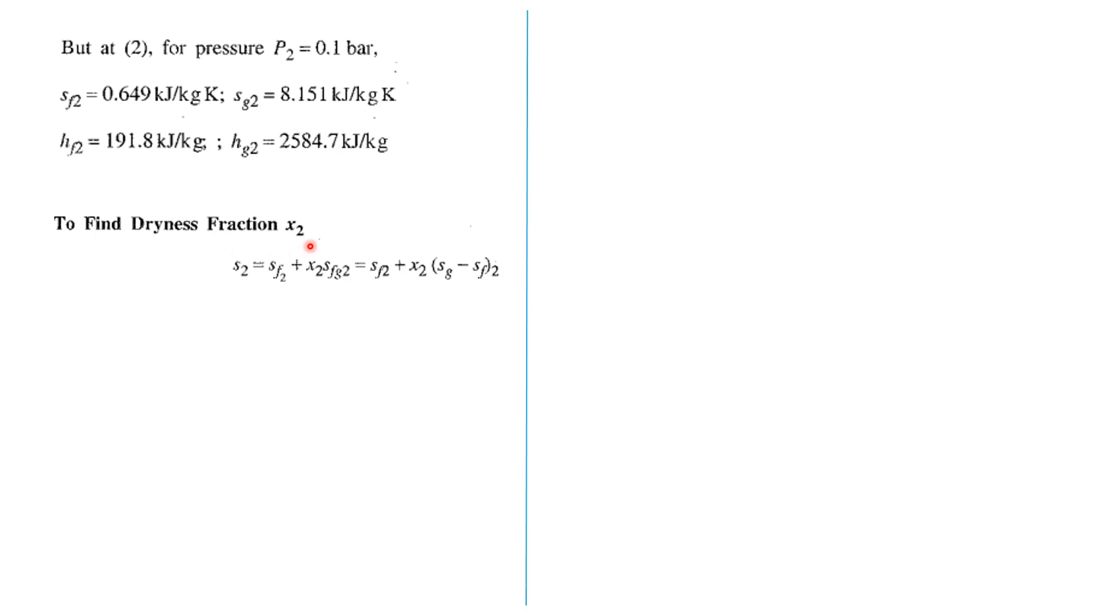To find the dryness fraction at 2, that is the exit of the nozzle, s2 is equal to sf2 plus x2 times sfg2. Now, what is sfg2? sfg2 is equal to sg2 minus sf2. Substituting the values from the steam table, you get an equation and solving that equation, you get the dryness fraction as 0.791.